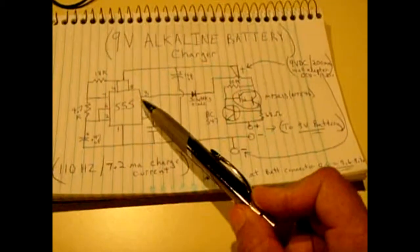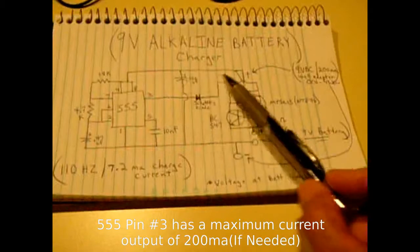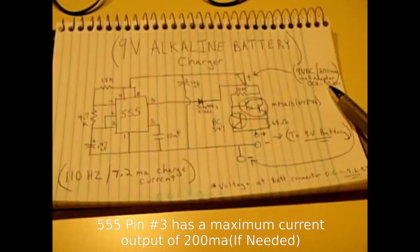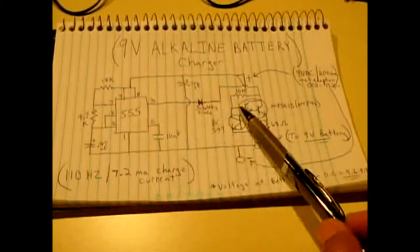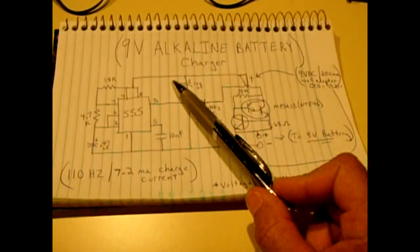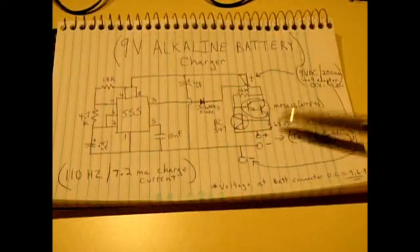We have the wall adapter supplying power for the entire circuit and the output on pin three is usually one and a half to two volts lower than the positive rail. So we're coming in at 13 and a quarter and it's also going to drop because it's going to be under a load.